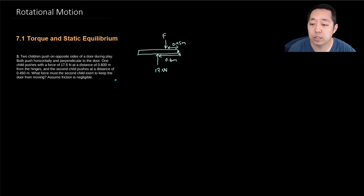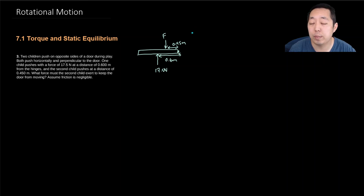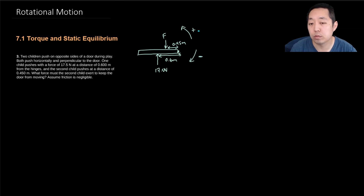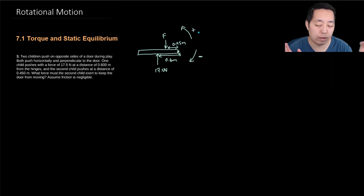What force must the second child exert to keep the door from moving? The way to do this is to calculate the torque — torque has a direction. In an algebra-based physics class like AP Physics 1, you simply describe direction as clockwise or counterclockwise. I typically take counterclockwise as the positive direction and clockwise as negative, though you can switch them.